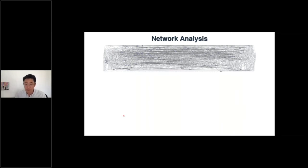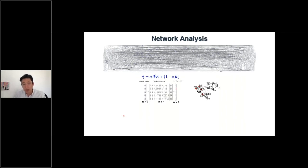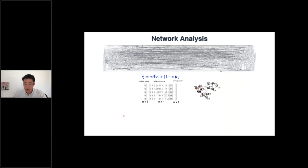This is a quick slide on why we need network analysis — some of you may already be familiar since this is a knowledge graph conference. Network analysis is a very powerful tool for understanding complex network diagrams. For example, looking at the protein-protein interaction network of only 164 proteins is already quite complex. An algorithm like random walk with restart can be applied in this context to identify important proteins. What it provides at the end of training is a score for each node, which helps us rank all 164 proteins by importance.